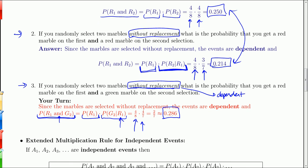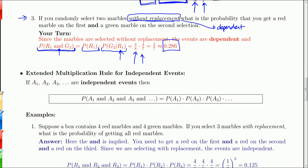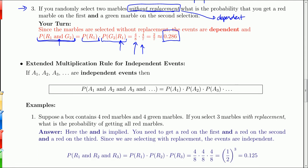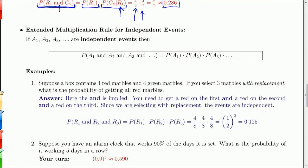So that was just two events and we multiplied the probabilities. What if we have more than two events? If the events are independent, then the probability of A1 and A2 and A3 and so on is just the product of their individual probabilities.